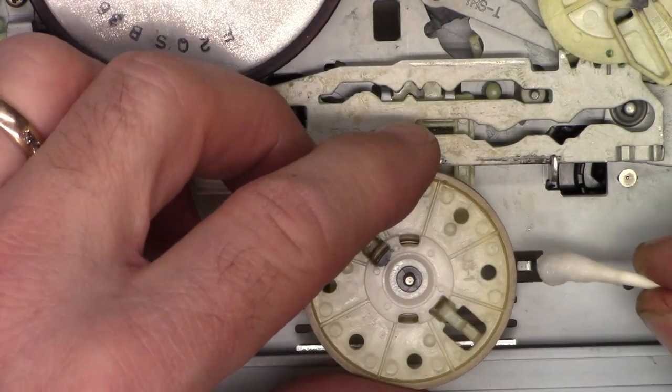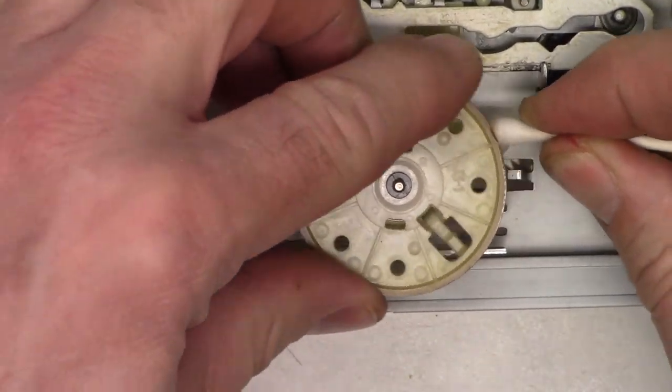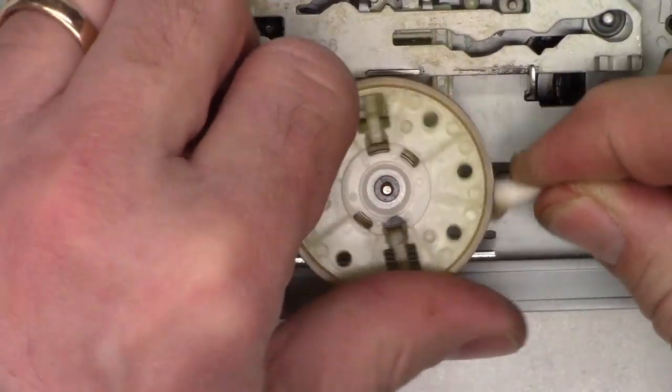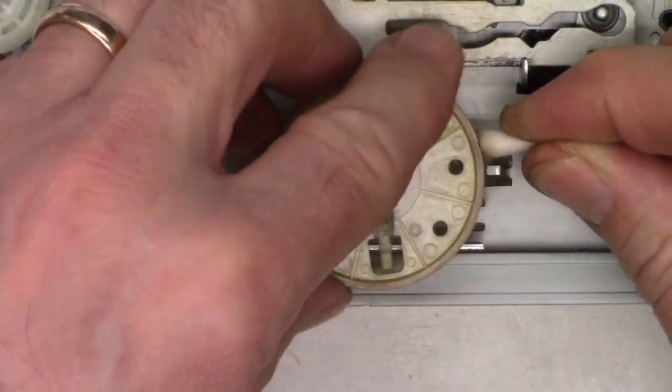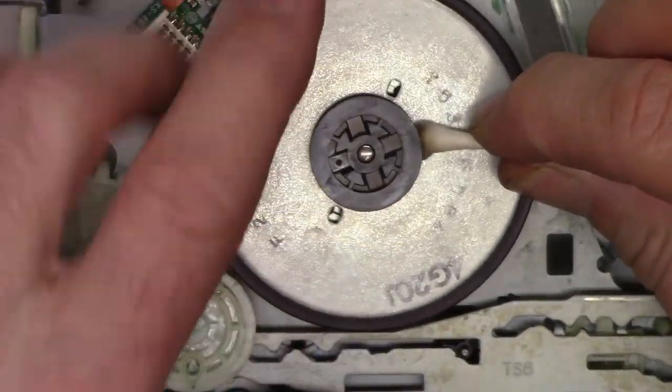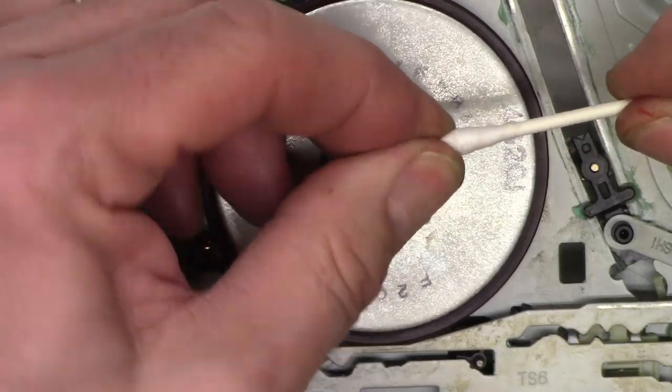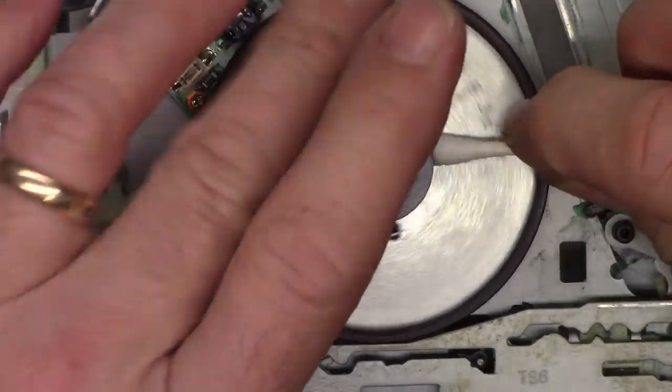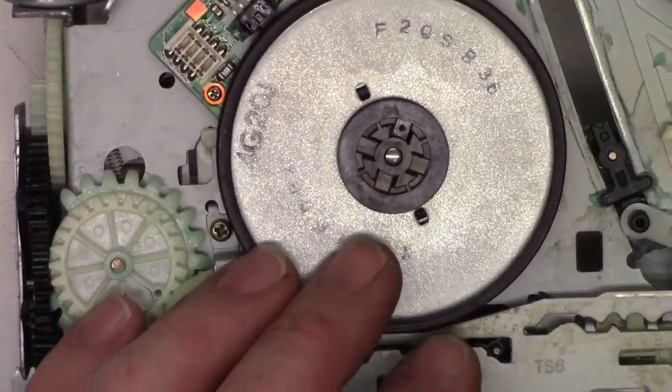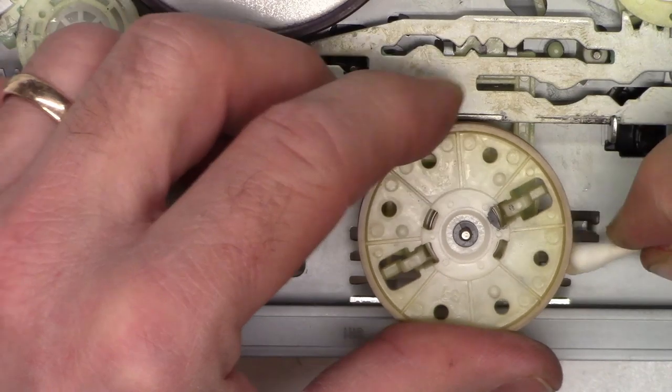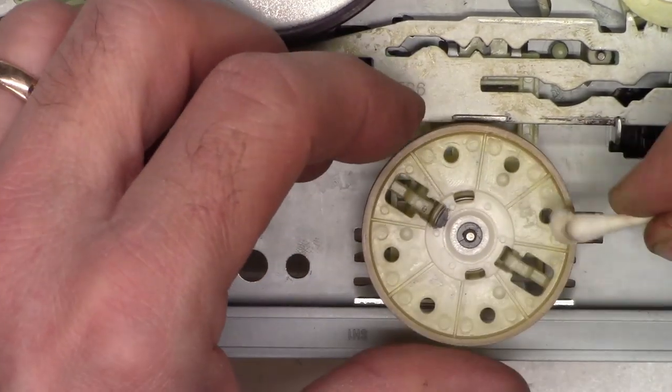I'm going to go ahead and dip the cotton swab in the acetone. And we'll get in the belt pulley. And we'll just run it around a little bit. Just to get any glaze off of it. Look at that, how much came off. We'll do the same thing to the capstan pulley. I'm going to go ahead and flatten that out. I'm going to re-dip it. Much better.